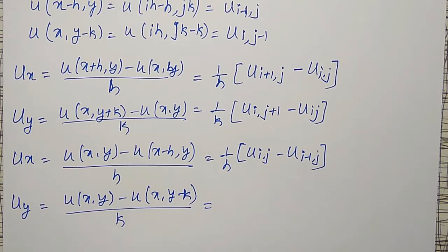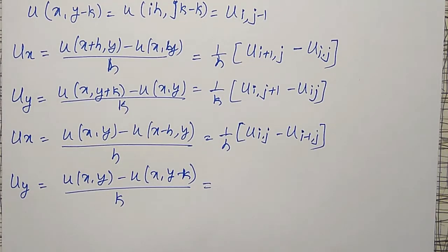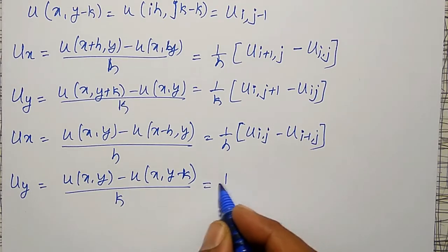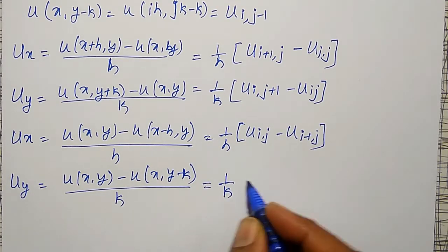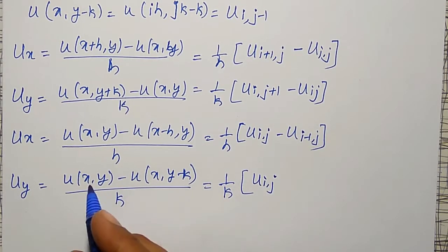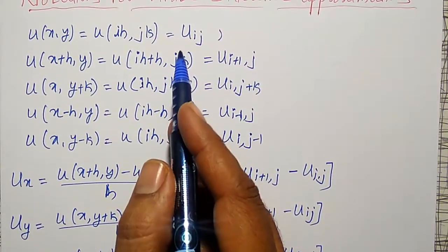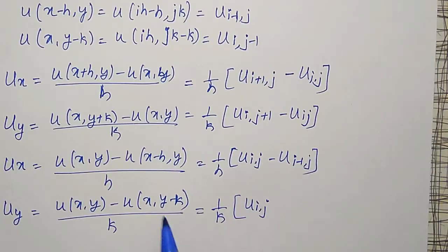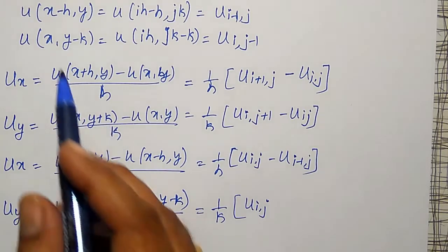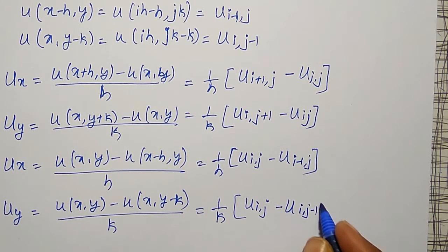This is the backward difference for the partial derivative with respect to y. That is 1/k times u_{i, j} minus u_{i, j-1}.